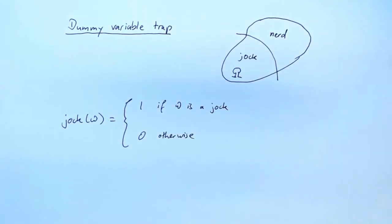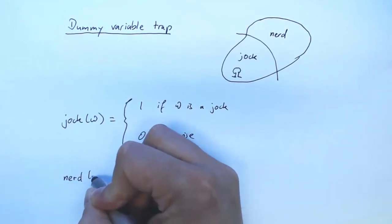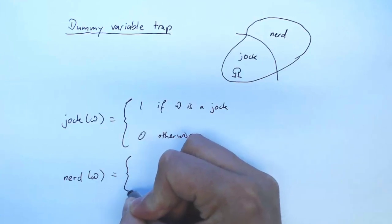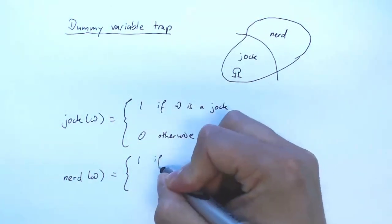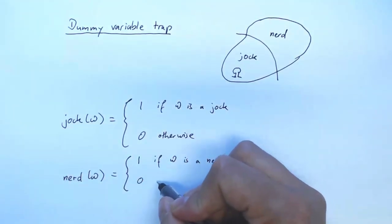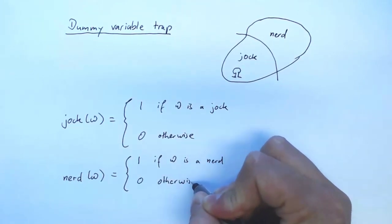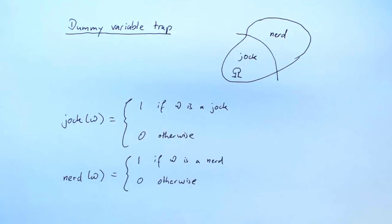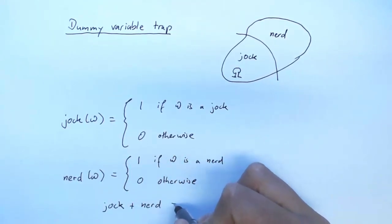We also define a random variable nerd which for every student in the population takes the value 1 if ω is a nerd and the value 0 otherwise. Now we know that we have to have jock plus nerd equal 1, because for every ω either jock is 1 and nerd is 0, or jock is 0 and nerd is 1, which in both cases gives us 1.